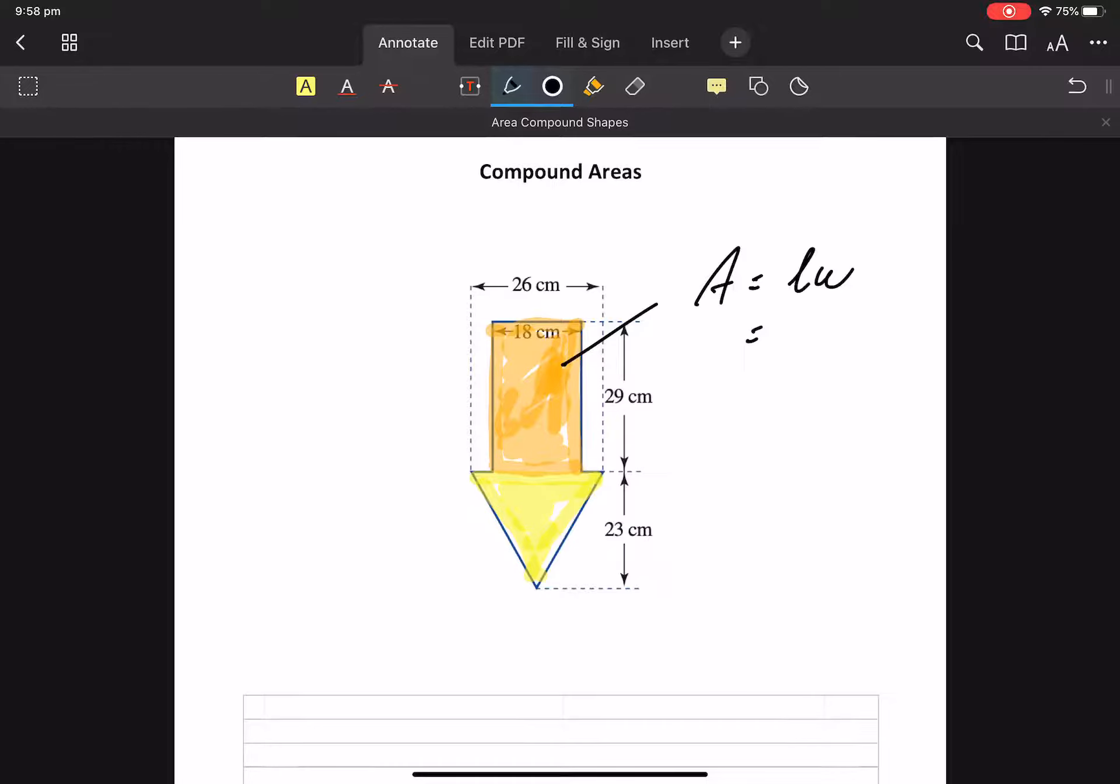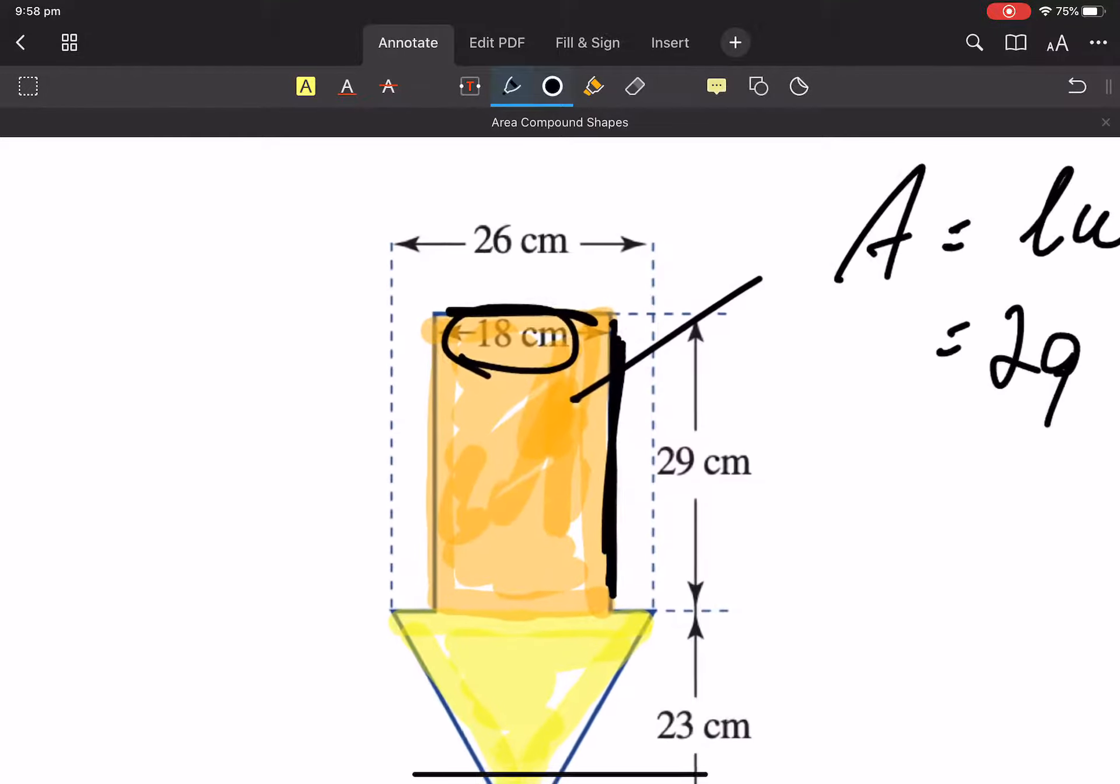Hey, there's a rectangle. There's my length, which is 29, and there's my width, which is 18.